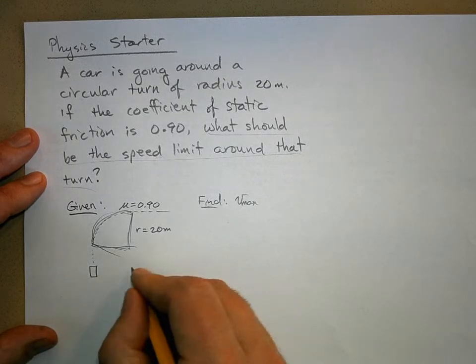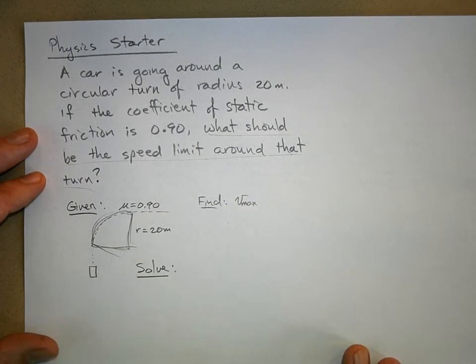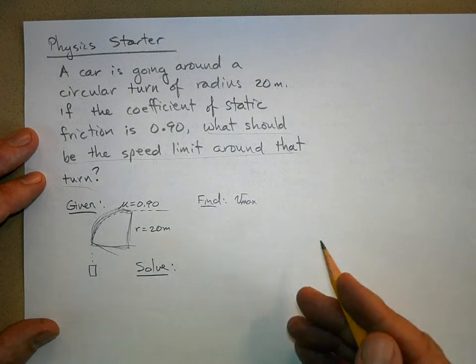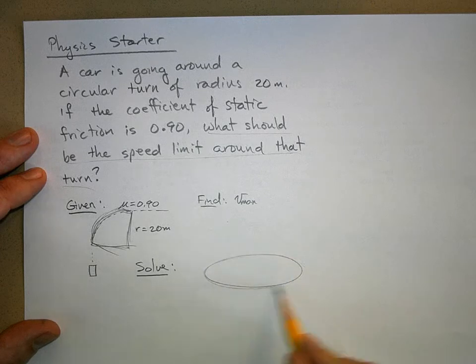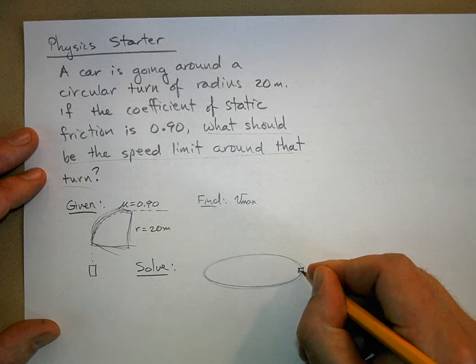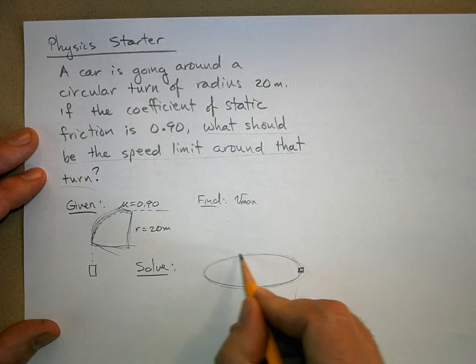So let's solve it. I'm going to redraw this because I want to show all the forces acting on the car. I like to draw an oblique view of the car, so here's a circle but we're looking at it with some perspective. Here's a car going around that circle.